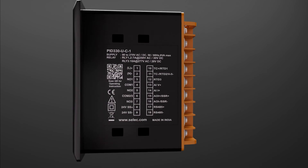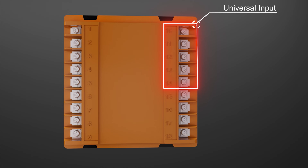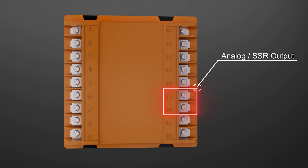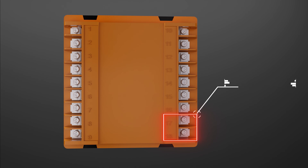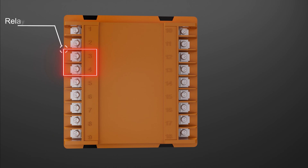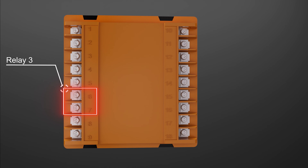For PID 330U: Terminals 1 and 2 for auxiliary supply. Terminals 10, 11, 12, 13, and 14 for universal input. Terminals 15 and 16 for analog current, voltage, or SSR output. Terminals 17 and 18 for RS-485 Modbus communication. Terminals 8 and 9 for sensor supply. Terminals 3 and 4 for relay 1 output. Terminals 5 and 6 for relay 2 output. Terminals 6 and 7 for relay 3 output.